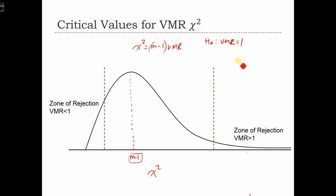So if we have alpha and we have a two-tailed test, we can put half of alpha in each tail. Or if we have a one-tailed test, we're just going to put all of alpha in one tail. We can find the critical values, then calculate chi-squared equals M minus 1 times VMR, and plot this chi-squared into this chart to see if it's in a zone of rejection or in the zone of acceptance.